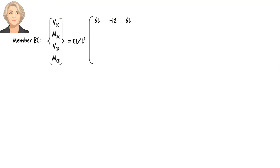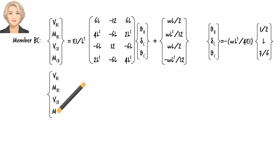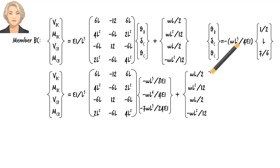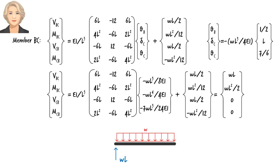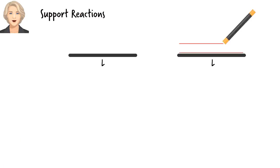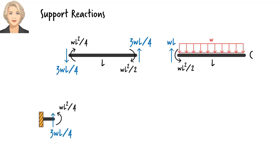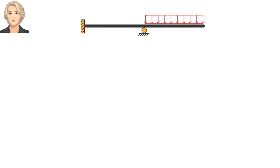For member BC, substituting the solution vector, we get the member end forces. Here are the member end forces for segment BC, and here is the segment's free body diagram. Now let's determine the support reactions for the beam using the segment free body diagrams. Finally, we draw the shear and moment diagrams for the entire beam.